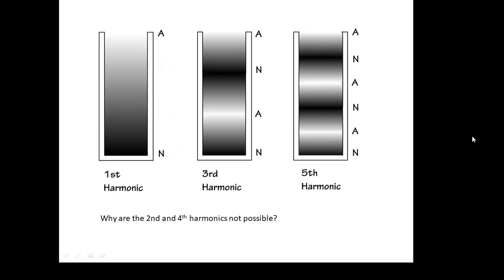What about harmonics? Looking at this diagram, there's our first harmonic, our fundamental — we have a node at the closed end and an antinode at the open end. We can't get the second harmonic, because that would mean there would be a node at the open end, and that's not allowed. An open end has to be an antinode. So we don't get the second harmonic; we get the third harmonic, which is three times the fundamental frequency. We don't get the fourth harmonic; we do get the fifth harmonic. So if the tube is closed at one end, we just get odd harmonics — first, third, fifth, etc. The even harmonics aren't possible.